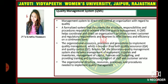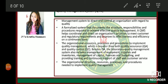A quality management system helps coordinate and direct an organization's activities to meet customer and regulatory requirements and improve its efficiency and effectiveness on a continuous basis. It encompasses the organizational resources, processes, and procedures to implement quality management, which is broader than quality assurance alone and also includes management and quality control. Besides quality assurance, the laboratory quality management system also includes management of equipment, supplies and inventories, management of capital, finances and budgeting, and providing training and continuous support of staff and customer service.